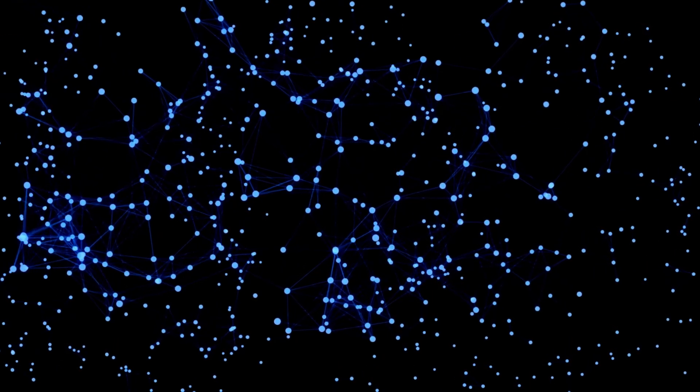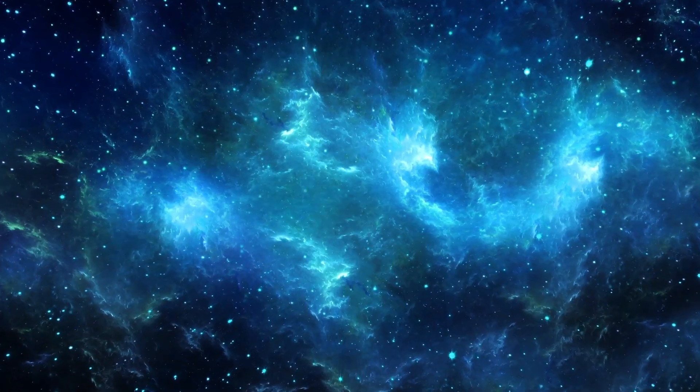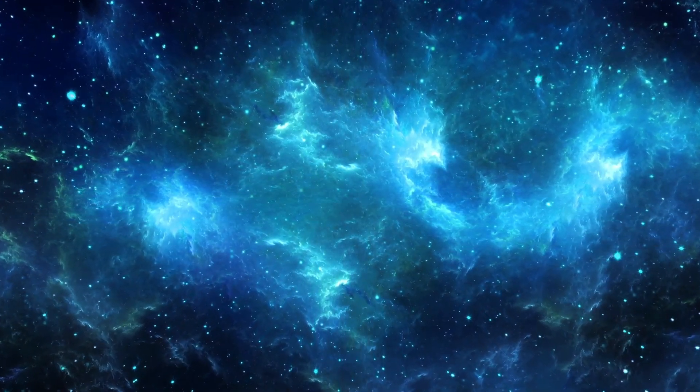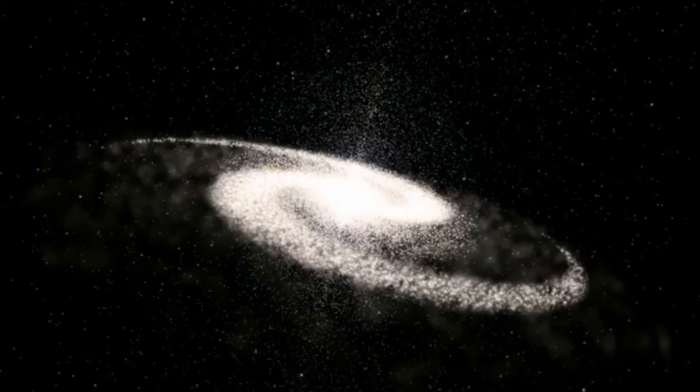However, that's not all. There are also hot Jupiters, which are gas giants that orbit incredibly close to their host stars. They exist in a scorching world with temperatures that could melt metal. Imagine being able to observe such a planet up close, with its raging storms and oppressive heat.